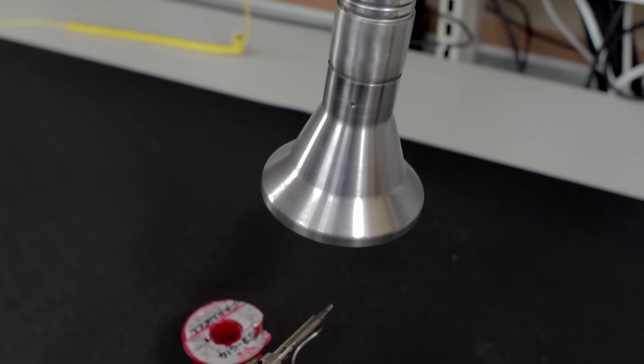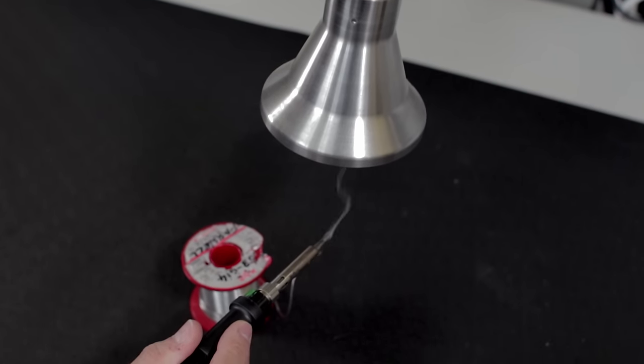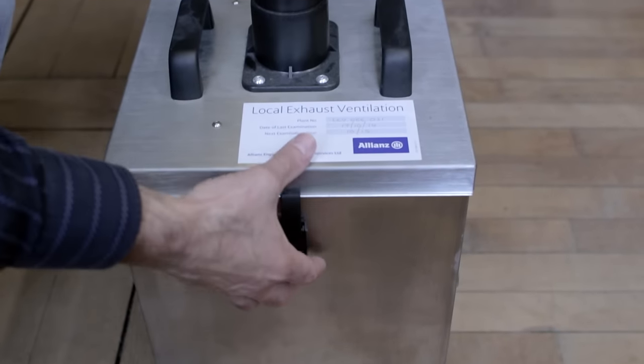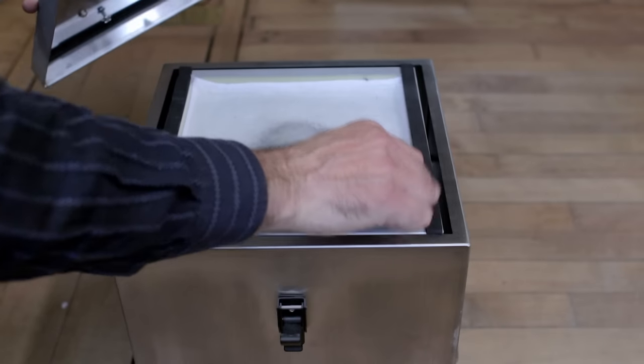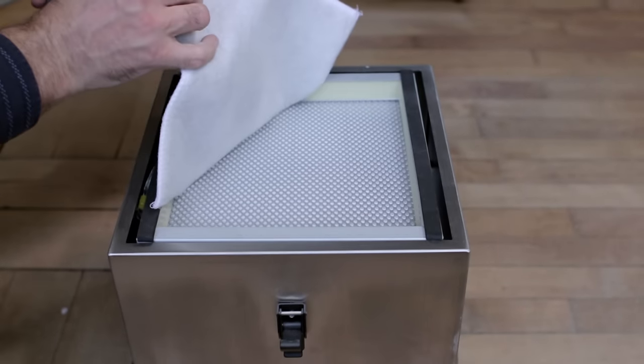Although modern flux is not toxic when soldering you should always use a fume extractor to prevent the fumes from the flux irritating your lungs. The fumes are extracted by a high efficiency particulate air filter or HEPA filter before the air is returned to the room.